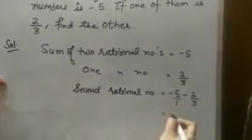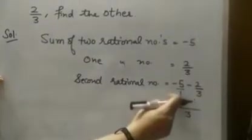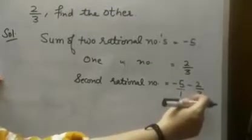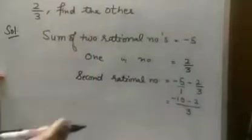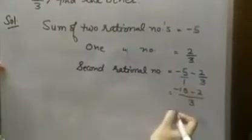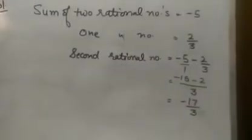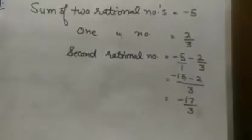Again, the subtraction is possible by taking LCM. The LCM of 1 and 3 is 3. 3 divided by 1, 3 multiplied by minus 5, minus 15. 3 divided by 3, 1 multiplied by 2. Here it's minus 2. Now both numbers are negative. Add their value and put negative sign. So we have found the second rational number is minus 17 by 3.